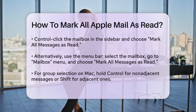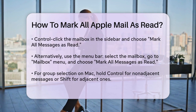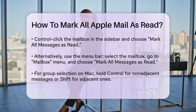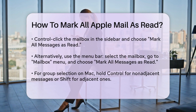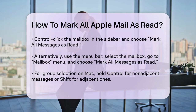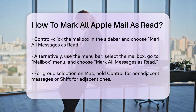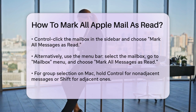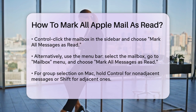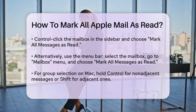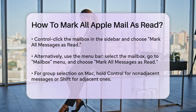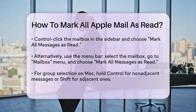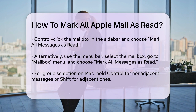If you prefer using the menu bar, you can select the mailbox or folder, then go to the Mailbox menu at the top and choose Mark all messages as read. For marking a group of emails, select the messages you want. You can hold Control to select non-adjacent messages or use Shift to select a range of adjacent messages. Then right-click or go to the Message menu and select Mark as Read.